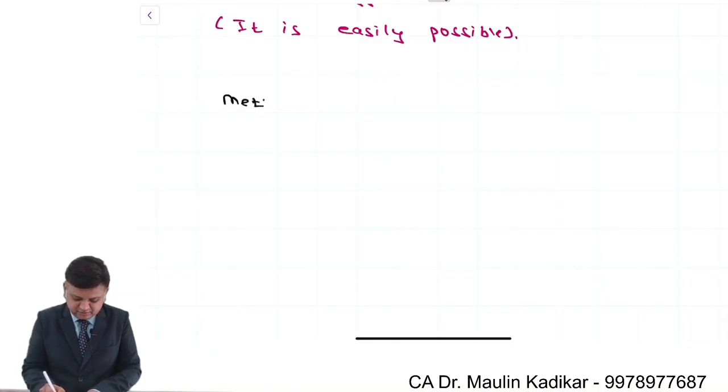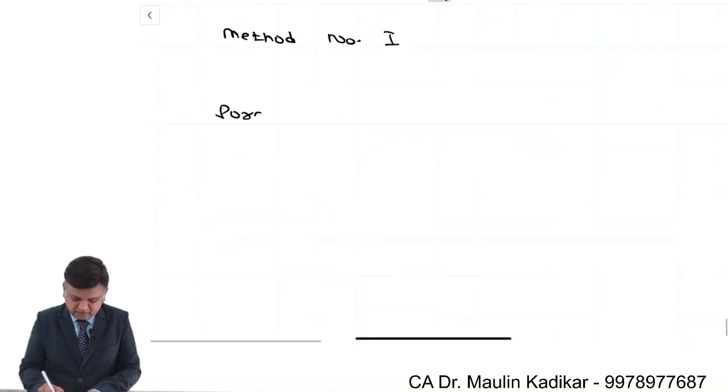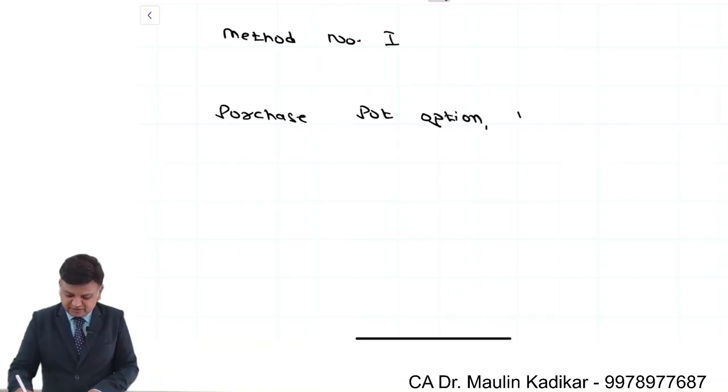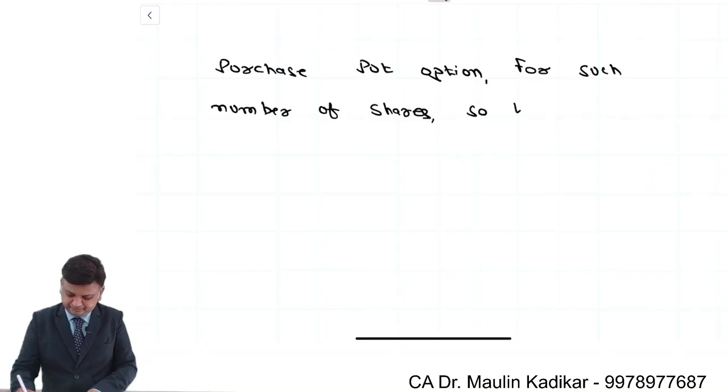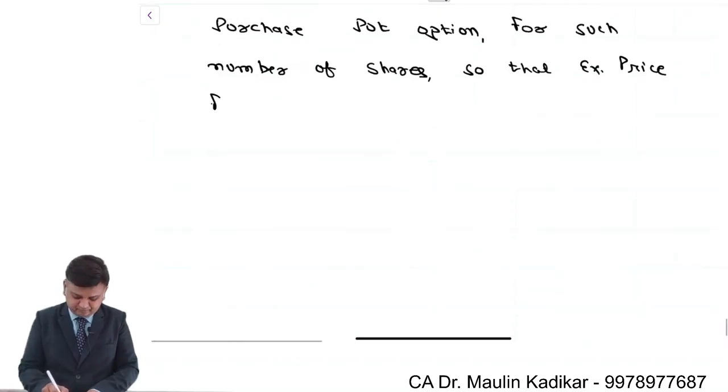Now, method number one, from here the answer starts. Purchase put option for such number of shares so that exercise price for them is rupees 5 lakhs.